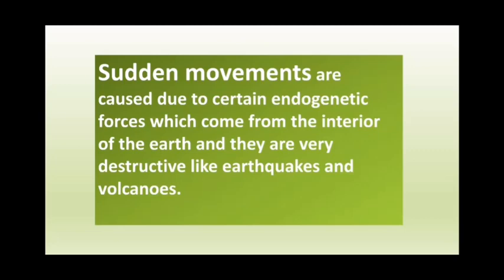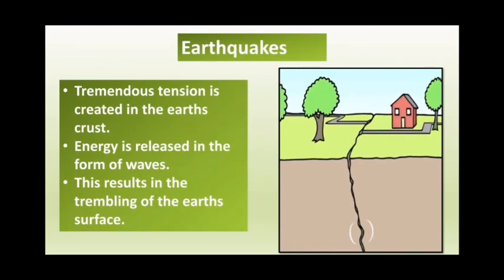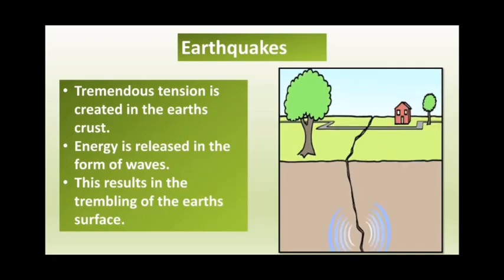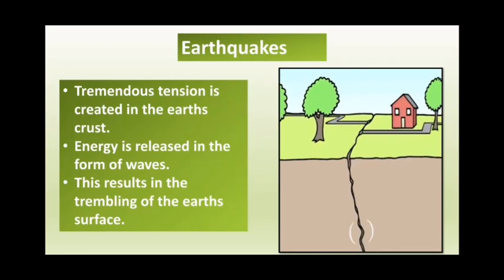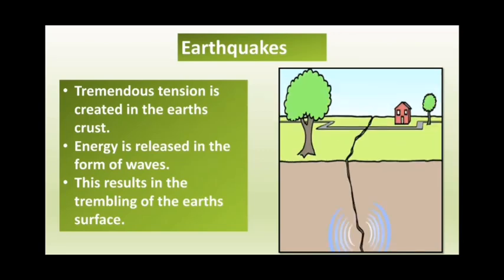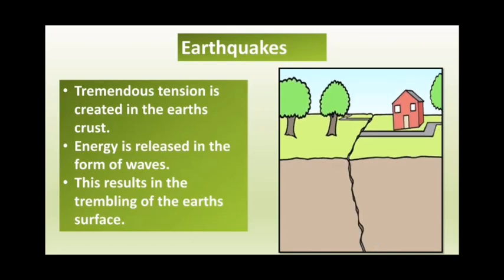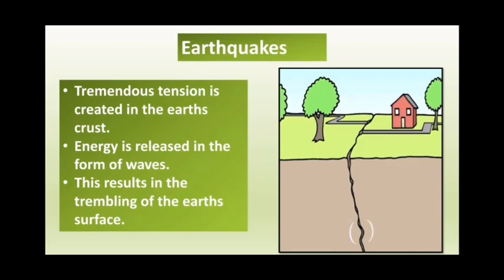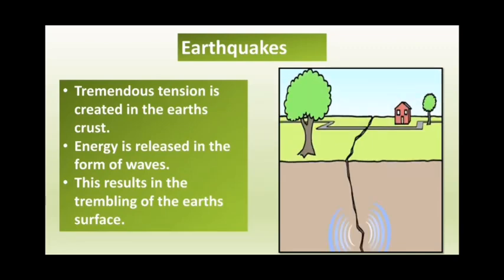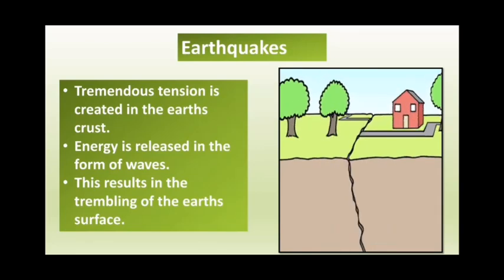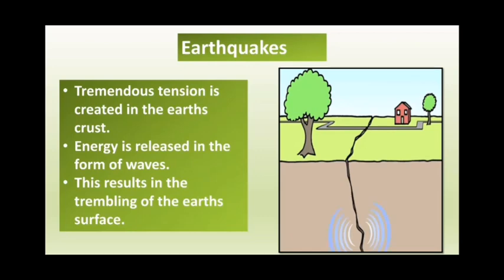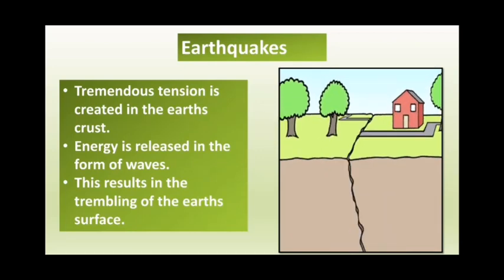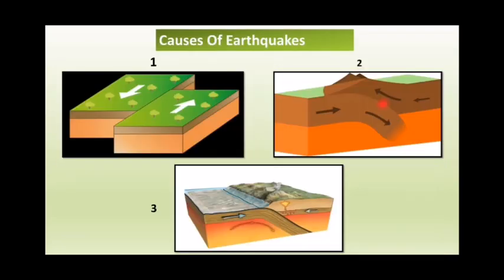First let us learn about how earthquakes occur. Because of the movements occurring in the interior of the earth, tremendous tension is created in the earth's crust. When the tension goes beyond limits, the energy is released in the form of waves. These waves cause trembling on the surface of the earth, which occurs in the form of an earthquake. The magnitude of the earthquake is measured by the Richter scale.